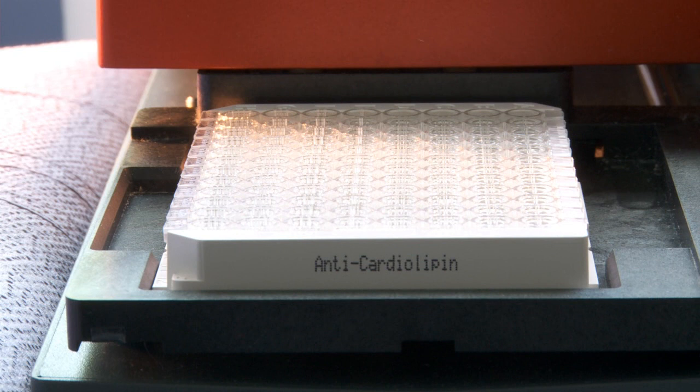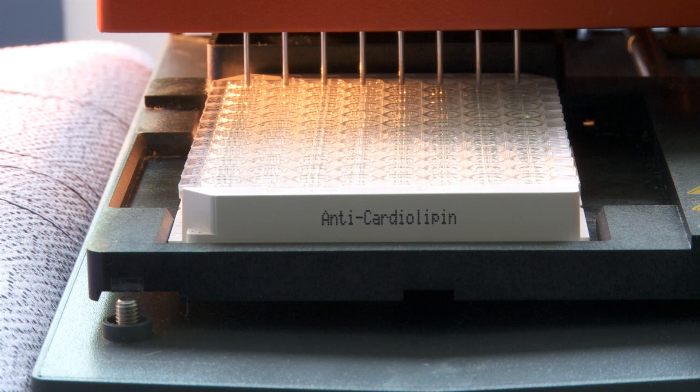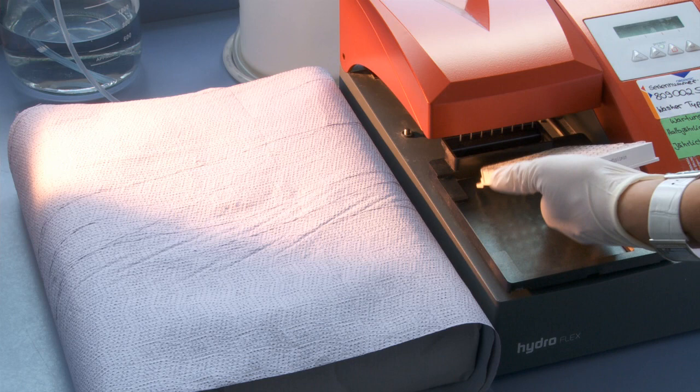To remove unbound antibodies and other components of the sample, the plate is washed three times with 300 microlitres of wash buffer per well in the ELISA washer. To remove residual wash buffer, the plate is firmly tapped several times.